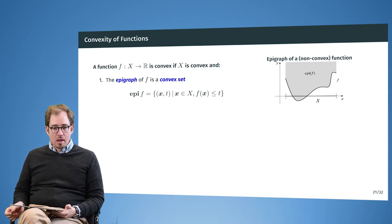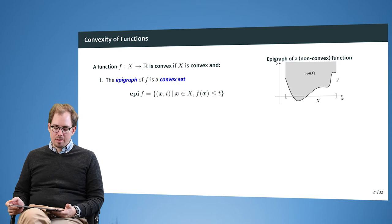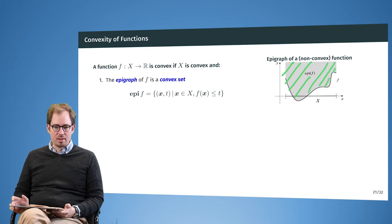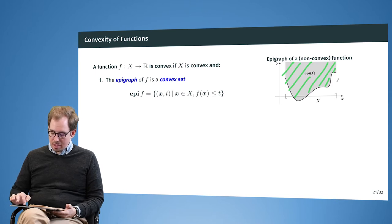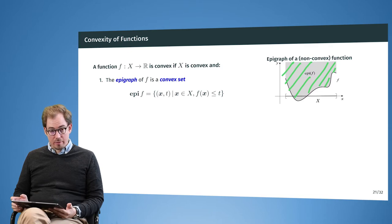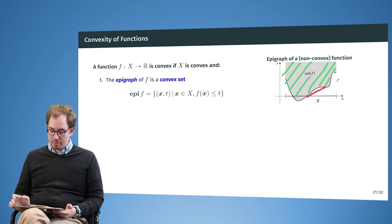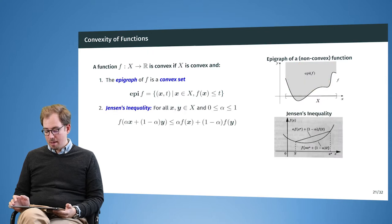Besides convexity of sets, we are interested in convexity of functions, and there are a couple of equivalent definitions. The first is that the epigraph of the function should be a convex set. The epigraph is all the points that lie above the function. In this case it is not convex, because if we draw the line segment between two points on the boundary it will go outside.